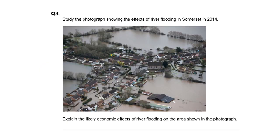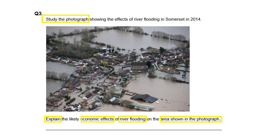The first four-marker: study the photograph showing the effects of river flooding in Somerset in 2014 — it was in black and white in your test, which makes it slightly more tricky. The question is: explain the likely economic effects of river flooding on the area shown in the photograph. Highlight the key words: 'explain' means giving reasons why; 'economic effects' means it has to link to the impact on money — either a financial positive or negative impact of river flooding.